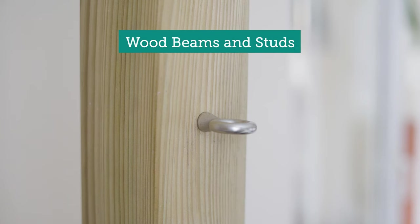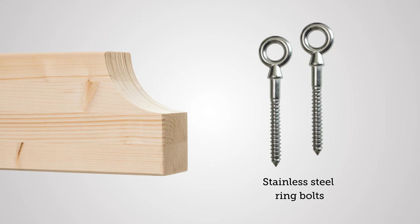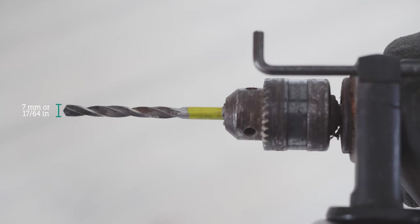The first solution is meant for wood beams and studs. In this case, we only need the two ring bolts. Our ring screws are 10 mm in diameter. We prepare an electric drill with a 7 mm wood drill bit.